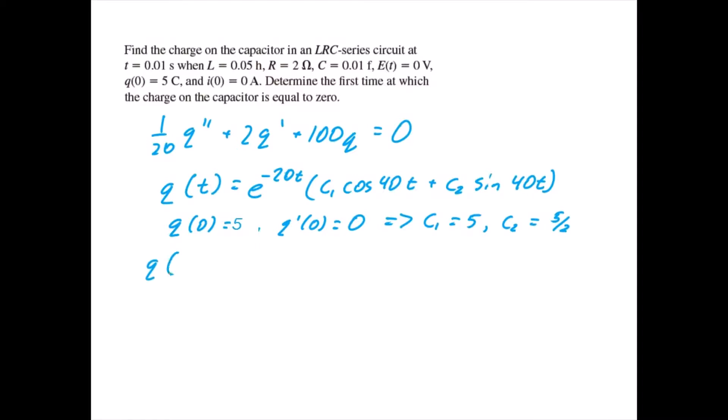Thus, the solution for Q of t is equal to e to the negative 20t times 5 cosine of 40t plus 5 halves times the sine of 40t.